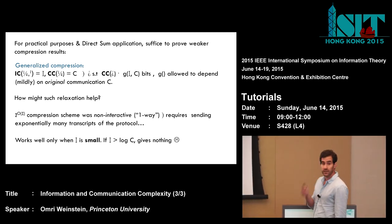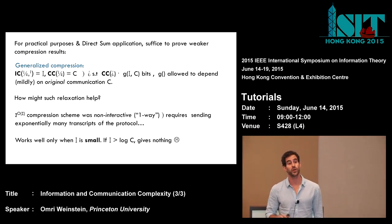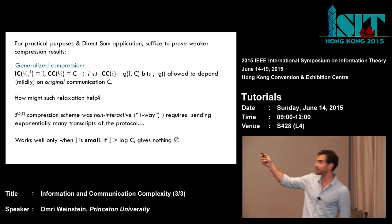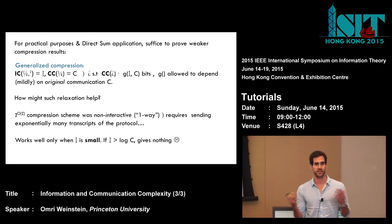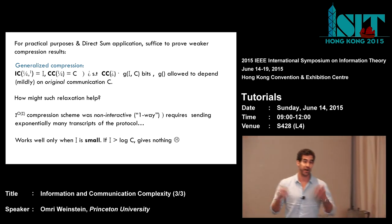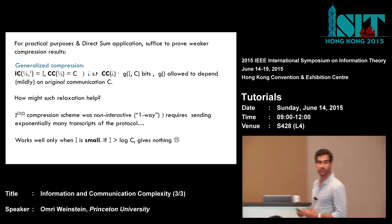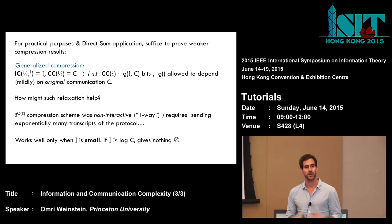By mild dependence we typically mean a sublinear dependence on c. So we started with c bits of communication. If we can compress to, say, i times log c or polylog c bits of communication, then this is very good — we made a lot of progress. This is a more relaxed version of compression, which is less usual to think about in the EE community, but for all practical purposes such compressions are good enough.